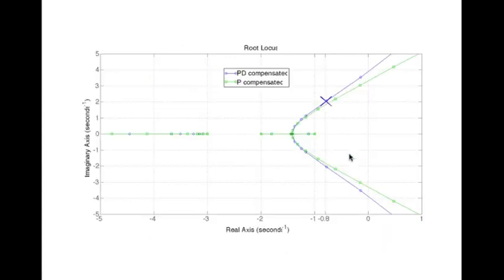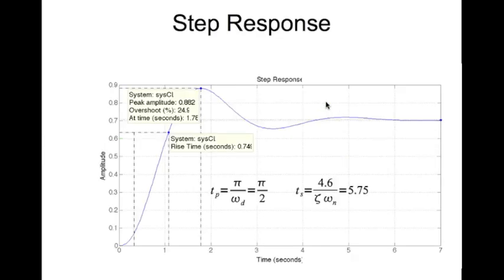The modified root locus with the PD compensator (shown in blue) is plotted on top of the original root locus of the plant with just a proportional controller. As you can see, the compensated root locus passes through minus 0.8 + 2i, which is the desired closed loop pole location.